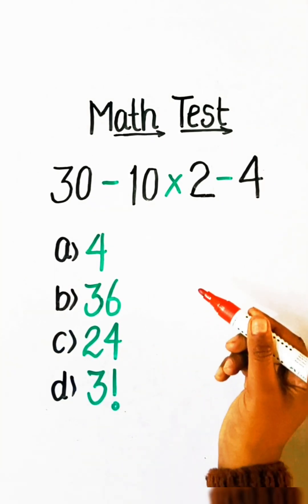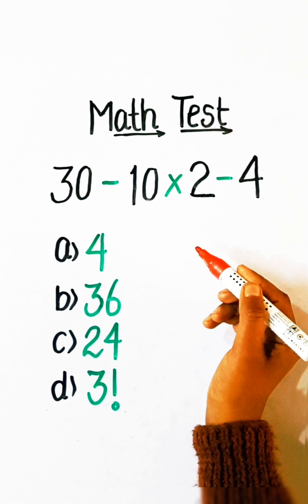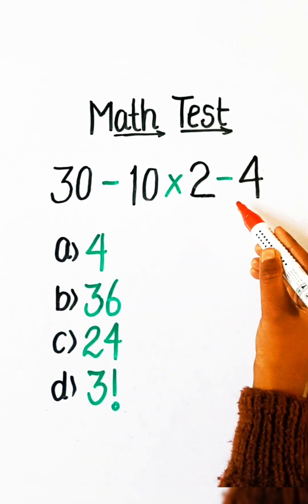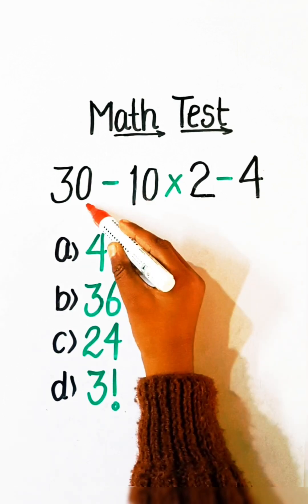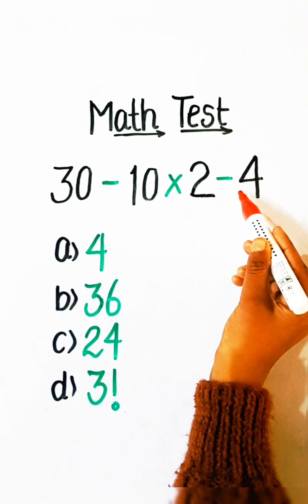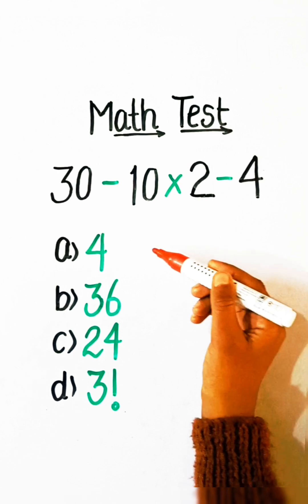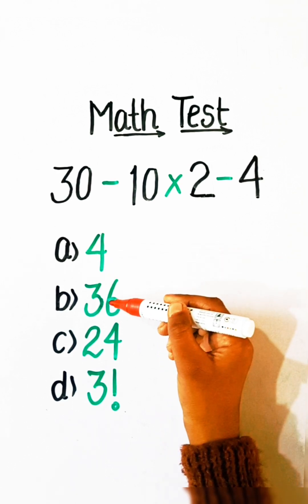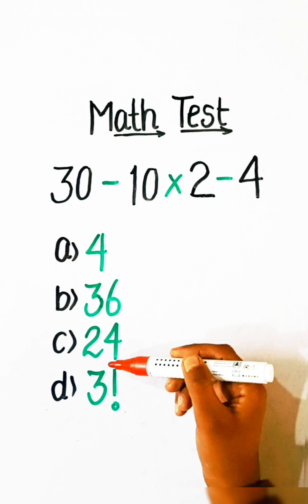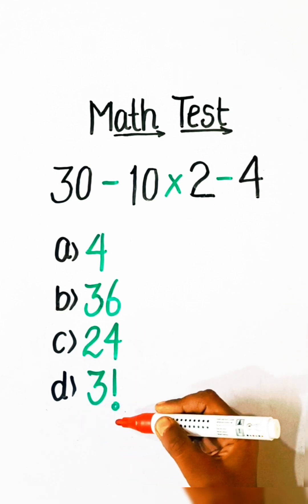Hello everyone, welcome back to my YouTube channel. In this video we will solve this basic math problem: 30 minus 10 multiply by 2 minus 4 equals to what? Option A: 4, Option B: 36, Option C: 24, or Option D: 3 factorial.